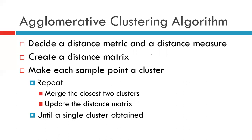Based on the distance matrix we will form a distance matrix that gives us the distances between all sample points, and then using the distance measure we identify the minimum distance. The algorithm goes like this: we take each sample point and initially treat each sample point as its own cluster. We merge the closest two clusters, then accordingly update the distance matrix, and keep repeating these steps until one big cluster is obtained.